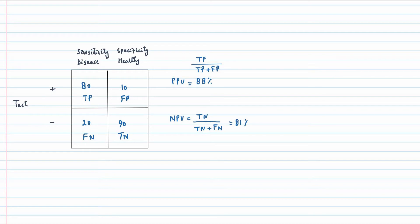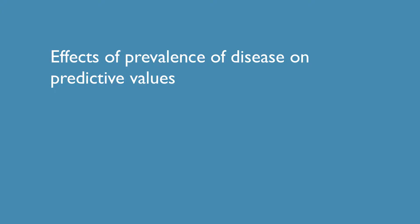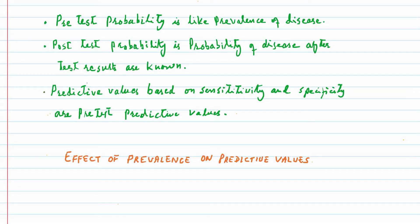We have already discussed how to calculate positive and negative predictive values with help of sensitivity and specificity of a test. However, change in prevalence of disease can significantly affect predictive values. For that reason, we need to understand how change in prevalence affects predictive values. Let's see the effect of change in prevalence on predictive values.